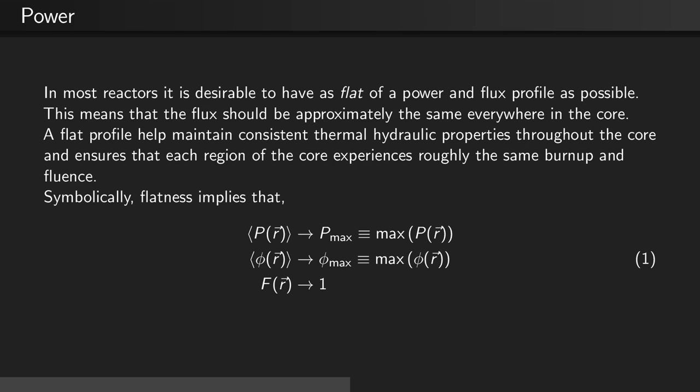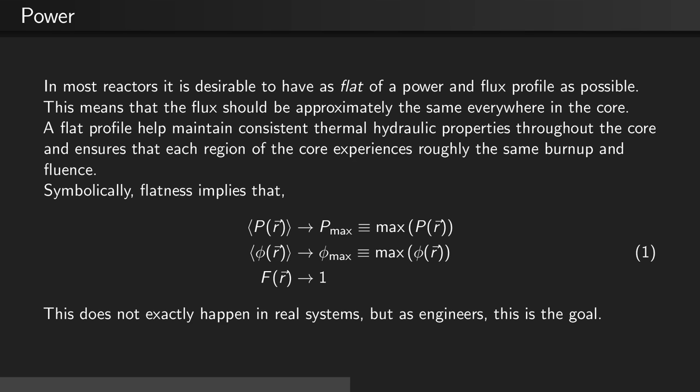Symbolically, flatness implies that the core average power density tends towards the maximum power, the core average flux tends towards the maximum flux, and the spatially averaged flux goes to 1. This does not actually happen in real systems, but as engineers, this is the goal.